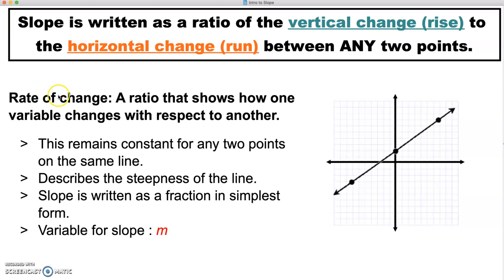A rate of change is a ratio that shows how one variable changes with respect to another. As we look at this line that's graphed here, it has a certain slope. The slope remains constant for any two points on the line, so the slope from this point to this point is going to be the same as the slope from this first point to this last point over here.